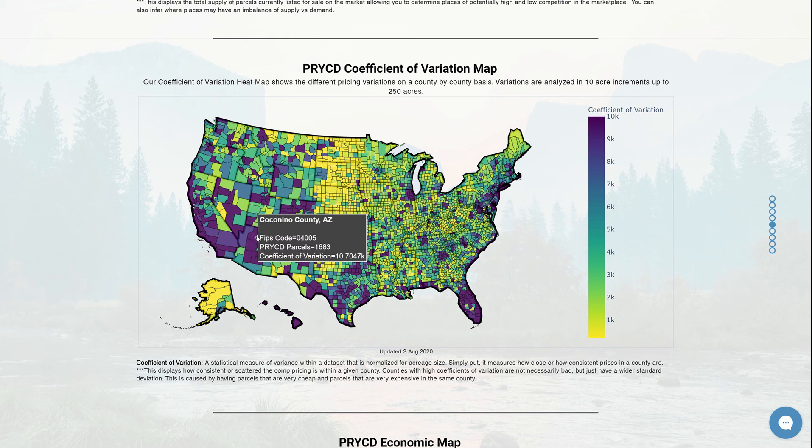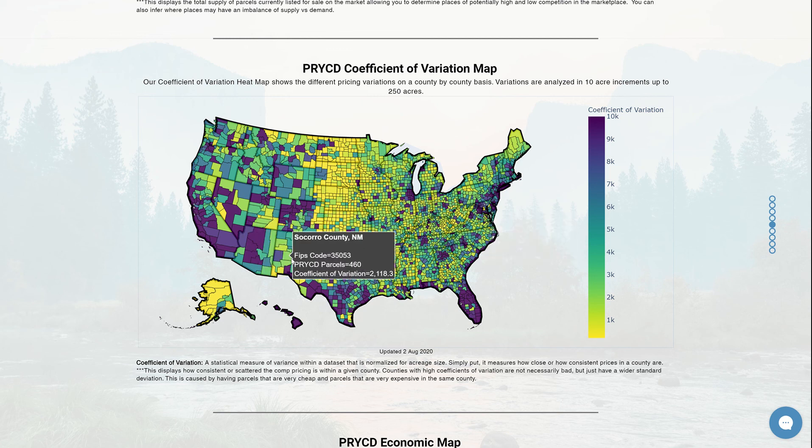But if I went somewhere else — let's go find somewhere lower. So Socorro County, New Mexico — you can see that this has a lot lower one, 2,118.3, which means that the comps are going to be more uniform throughout so you can price appropriately.